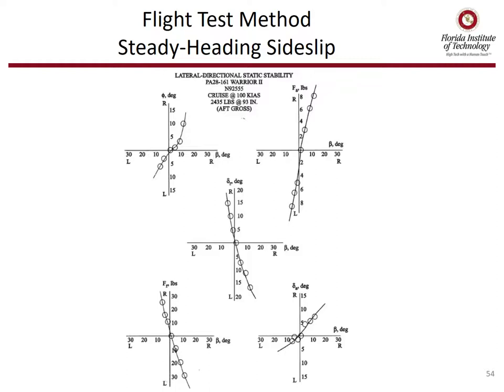The flight test method to evaluate static lateral-directional stability is the steady heading sideslip. A steady sideslip beta is placed on the aircraft, and the bank angle is adjusted to maintain steady heading. Data is recorded at different sideslip angles beta — including bank angle, aileron force, rudder deflection, rudder force, and aileron deflection. These are graphed with faired curves through the data, looking for general trends, linearity, and indications of rudder lock or rudder force lightening.